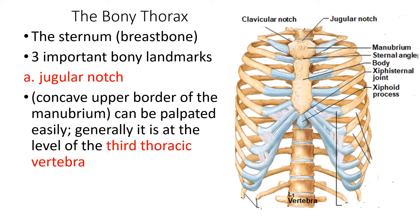The jugular notch is a concave upper border of the manubrium that can be palpated easily, located at the level of the third thoracic vertebra. Another landmark is the sternal angle — where the manubrium and body meet at a slight angle to each other, forming a transverse ridge at the level of the second rib. This provides a handy reference point for counting ribs, located at the second intercostal space.